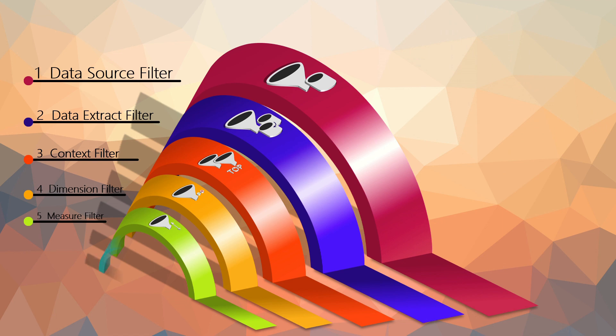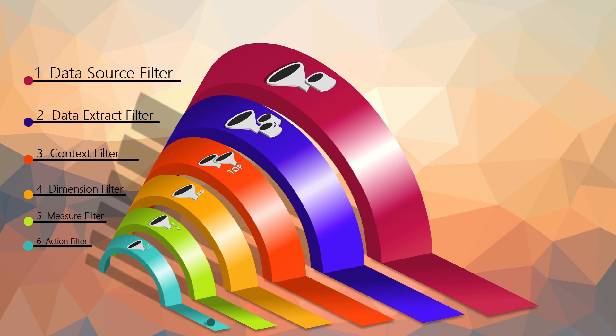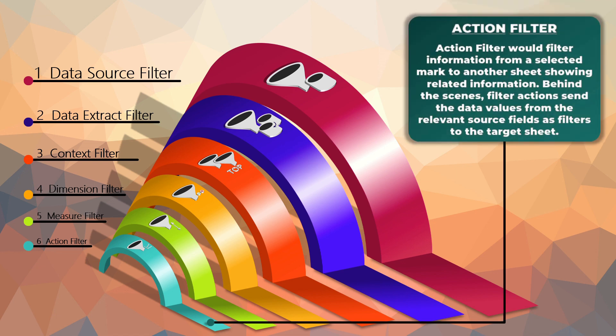Last but not the least, we have a filter that works in the dashboard panel, named action filter. Action filter is a different type of filter — it filters information from a selected mark to another sheet showing related information. This filter works to show the same actions on all sheets for selected points and hence eliminates data dynamically according to the user's view choice. Action filters are applied over the dashboard panel of Tableau where more than a single sheet is kept together.